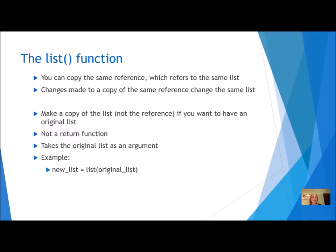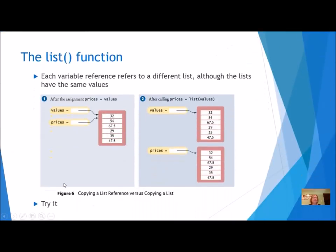When you make a copy using the list function, it is a return function — it does take an argument, which is the original list. List is my function, the original list is passed in as the argument, and it has to be assigned to something — a new list. Each variable reference refers to a different list, although the lists have the same values. If I created a list called values and assigned it to another variable called prices, they're both referring to the same list.